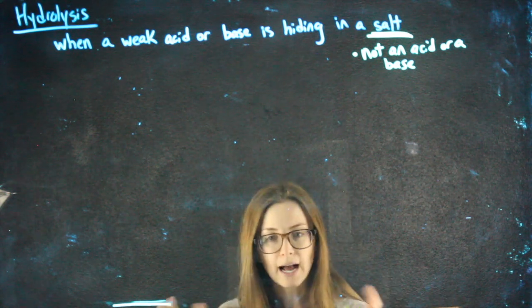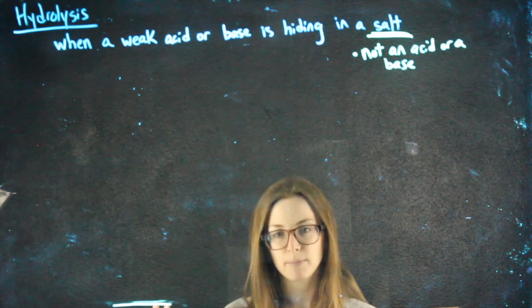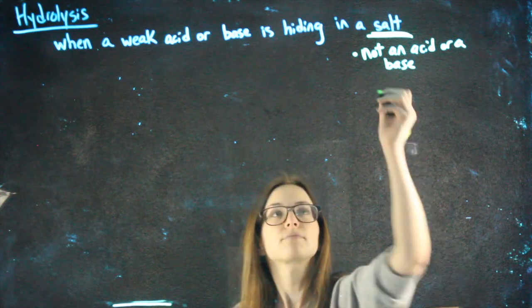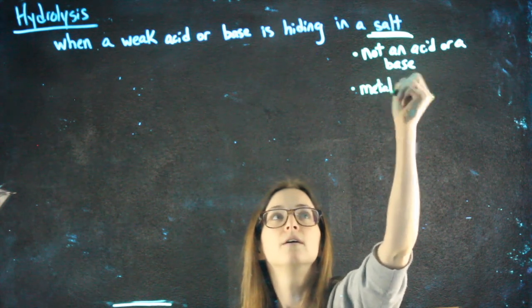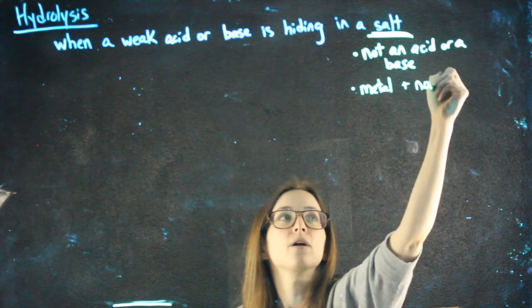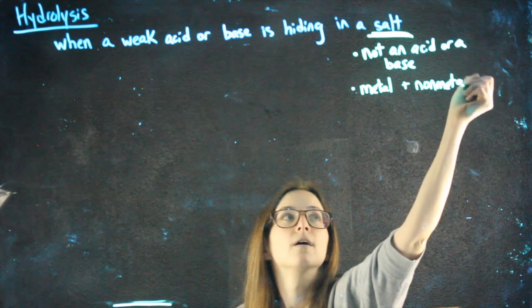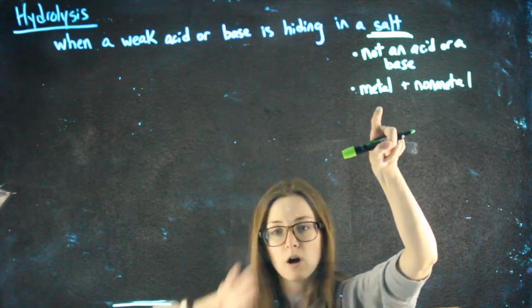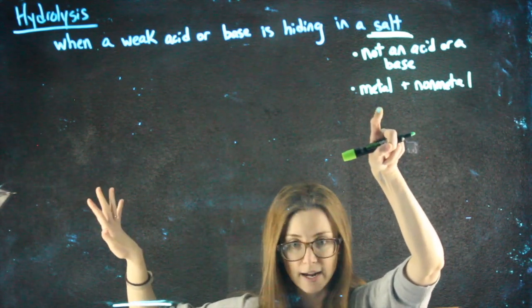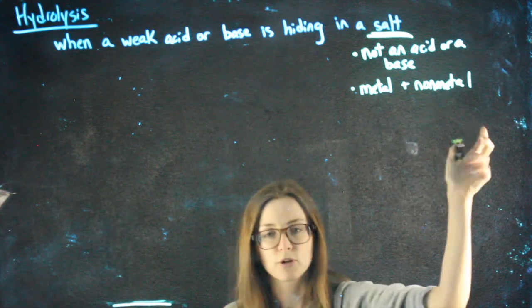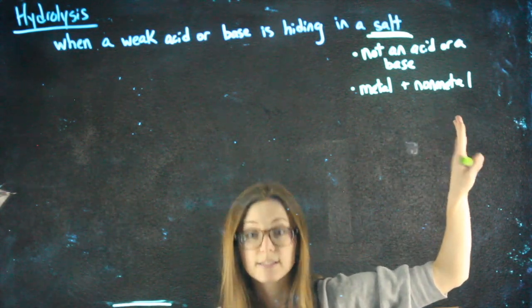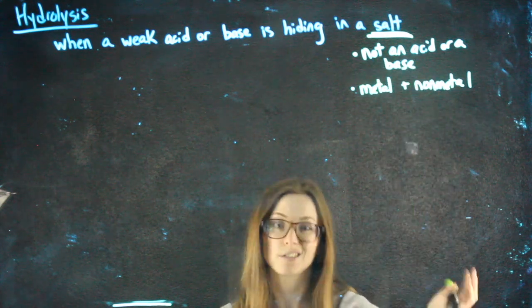So if it's not an acid or a base, and we're asked to find the pH of something, we should see if it's a salt. A salt will be made of a metal and a non-metal. So metals are things to the left of the staircase on the periodic table, other than hydrogen. Non-metals are things to the right of the staircase, including hydrogen, even though it's on the left.